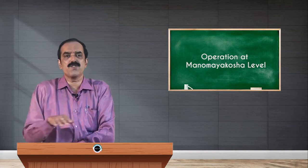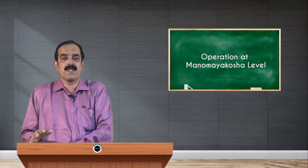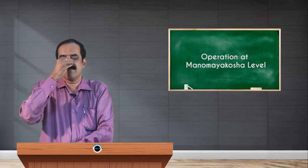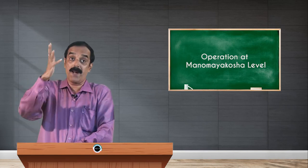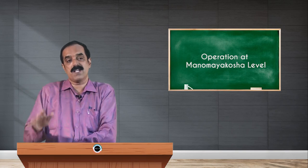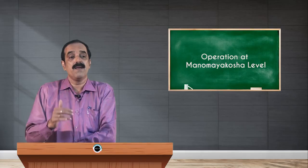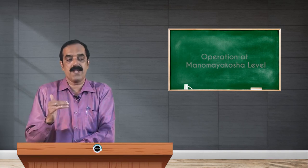Different pranayamas are given according to disease conditions. For stress, we give nadishodhana pranayama or alternate nostril breathing. Bhastrika pranayama and cooling pranayamas are also given. Especially in acid-peptic diseases, we give sheetali, sheetkari, and sadanta — breathing through the mouth by clenching the teeth, inhaling from the mouth, exhaling from the nostril — to bring acidity down. At Swami Vivekananda Yoga hospital, pranayama controls acidity within five minutes, faster than tablets. Today we studied annamaya and pranamaya kosha practices, and the next class will continue with pranamaya kosha operation.